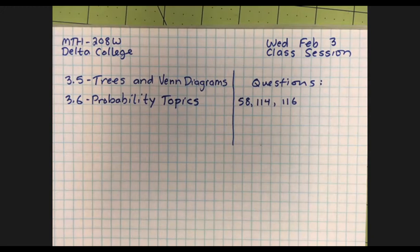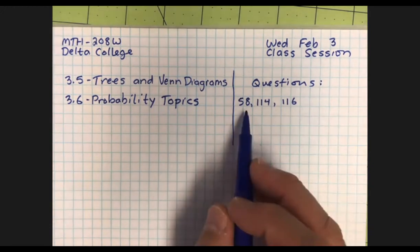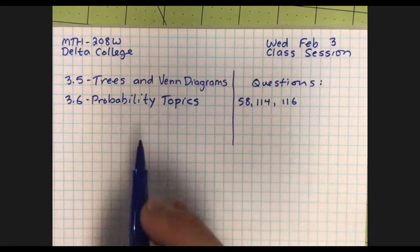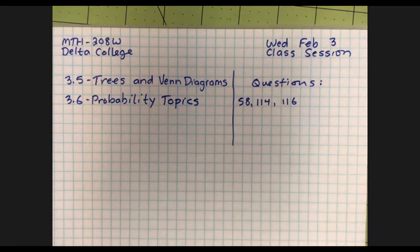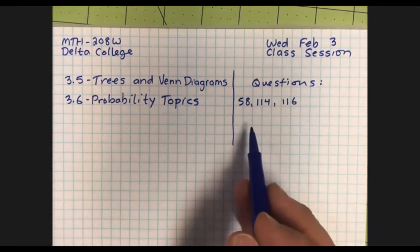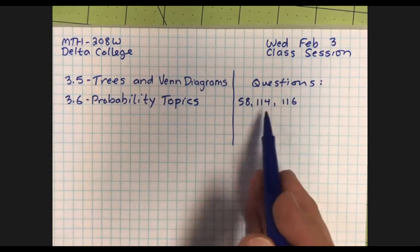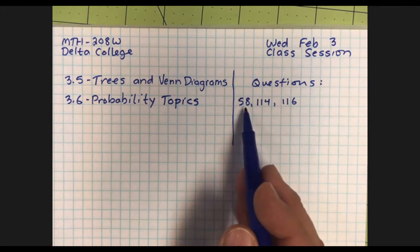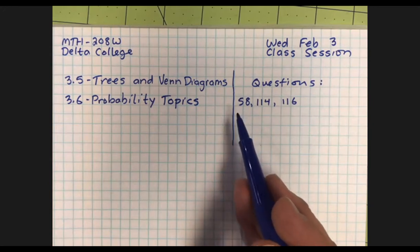I had questions that were interesting to me as I looked in these two sections — basically 3.5 on trees and Venn diagrams and then 3.6 on probability topics — so I have jotted down two questions I was searching for.